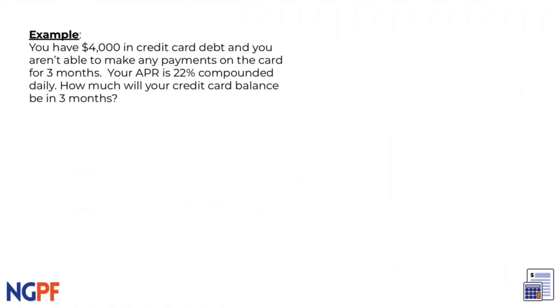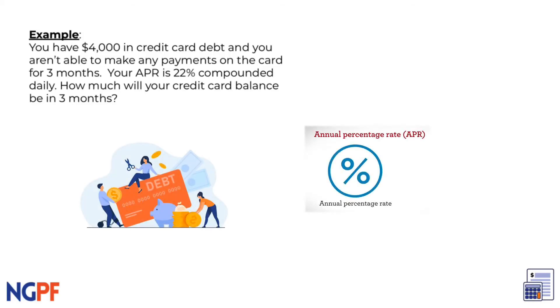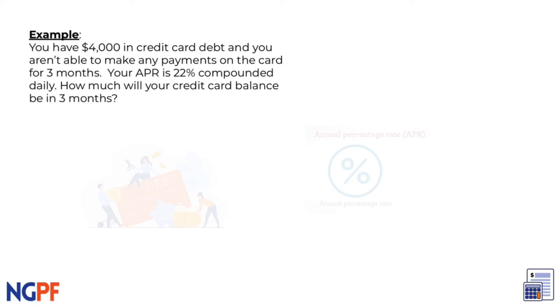Let's try this example. You have $4,000 in credit card debt, and you aren't able to make any payments on the card for three months. Your APR is 22% compounded daily. How much will your credit card balance be in three months?